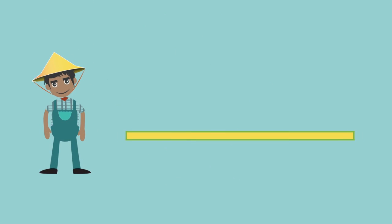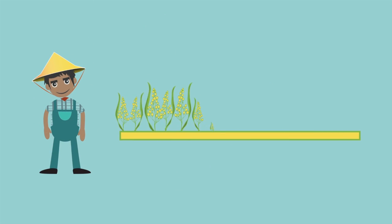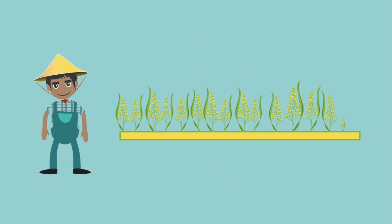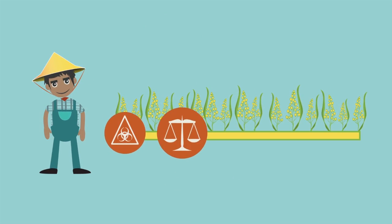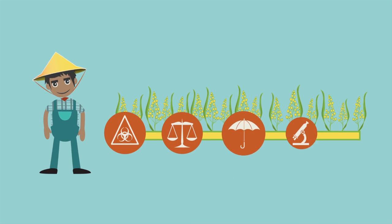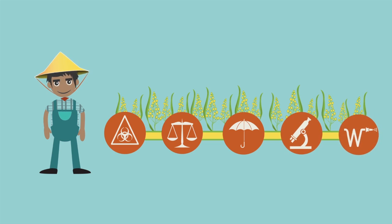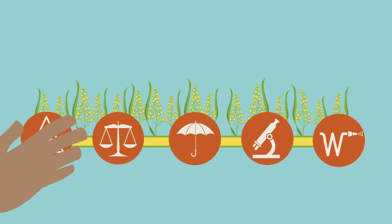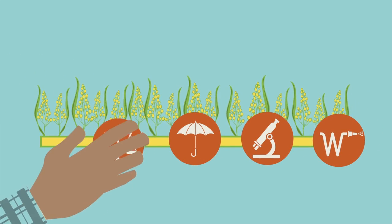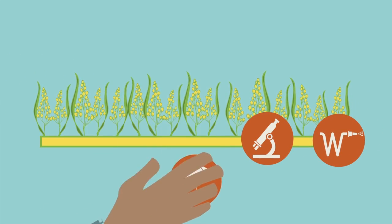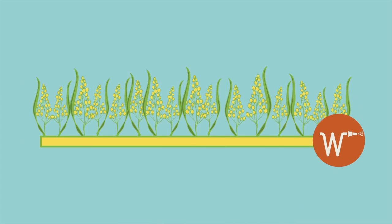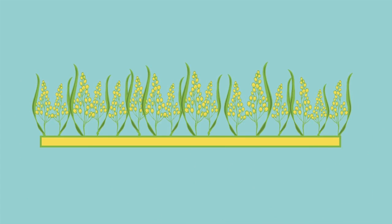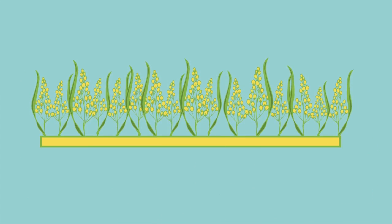Farmers will always face risks in both their production and the market that are largely out of their control. However, farmers that produce crops in the most appropriate manner can reduce the impact of these variables.